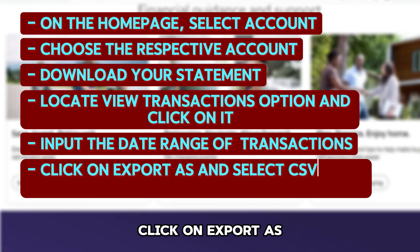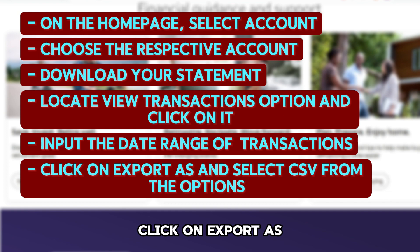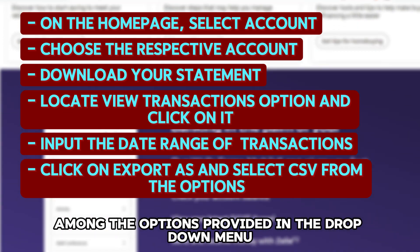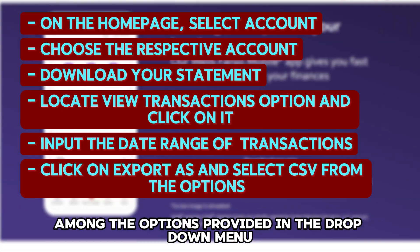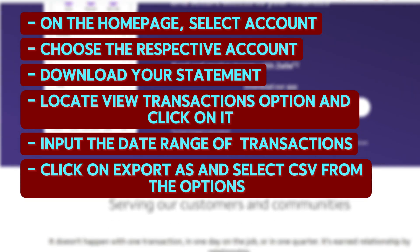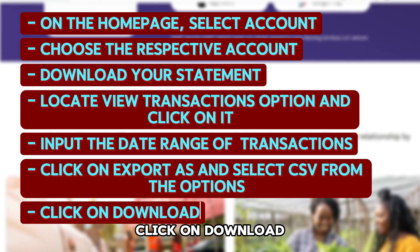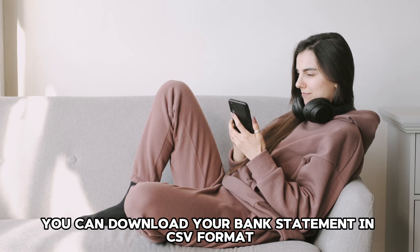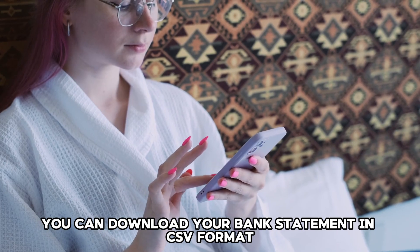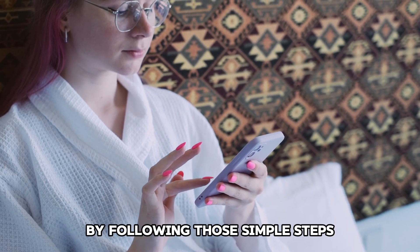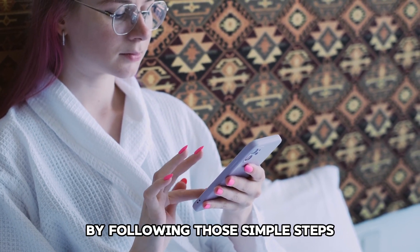Click on Export As. Among the options provided in the drop-down menu, click on CSV. Click on Download. And there you have it! You can download your bank statement in CSV format by following those simple steps.